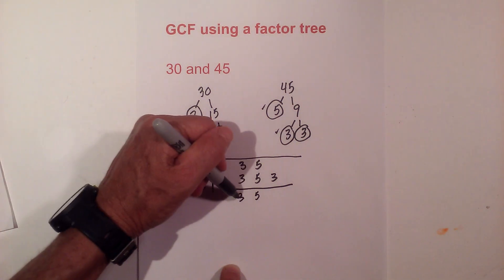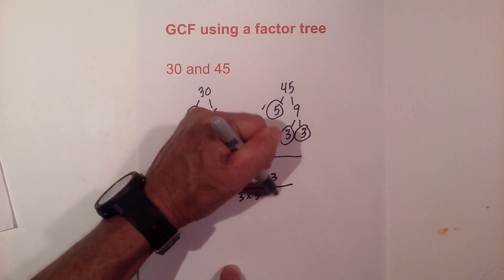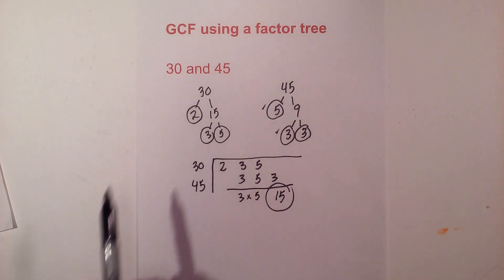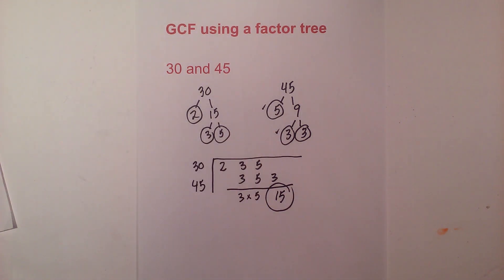Now all I do is multiply 3 times 5, which equals 15. So the GCF of 30 and 45 is 15.